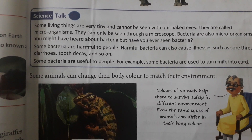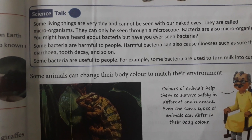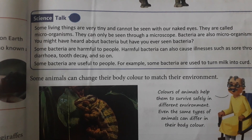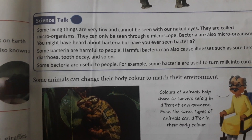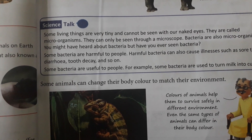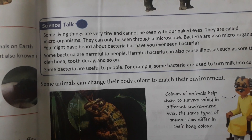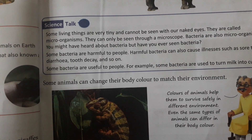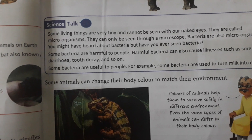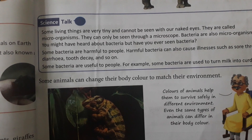Some animals can change their body color to match the environment. Chameleon - girgit - jahan jaata hai, wahan ke color ke according apne body ka color change kar leta hai. It does this for its own safety - jis environment mein jaata hai us environment ka same color kar leta hai, jisse ki koi pehchan nahi paata aur shikar nahi kar paata. Colors of animals help them to survive safely in different environments.